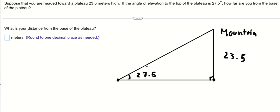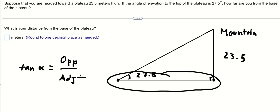This is a right triangle problem. We can use the tangent function. We have tan α equals opposite divided by adjacent. We want to find the adjacent side.